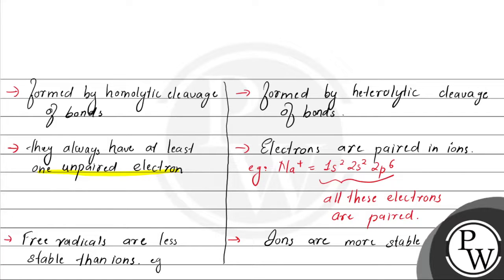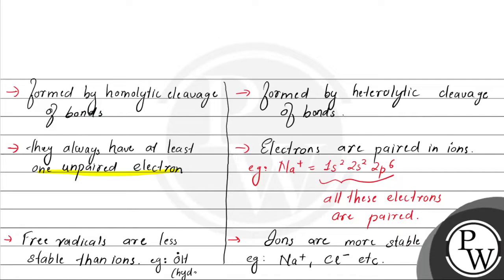Examples of free radicals will be: O, H — represented with a dot for the unpaired electron — this is the hydroxyl radical (·OH). Aur ions ka example hai Na+ (sodium positive), Cl- (chlorine minus), etc. These are ions, aur radical ka example hai ye hydroxyl radical.